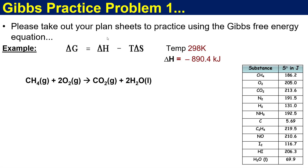Make sure you have your companion worksheet handy — let's try our first practice problem. We are calculating the free energy. They've given you standard state at 298 K and an enthalpy value of minus 890.4 kilojoules. You do not have to do anything with Hess's law, but they have not given you entropy for the system — they give you a table, so you have to calculate the entropy of the equation first. Pause the video now, try to solve this, and remember: if delta G is negative, the reaction favors a spontaneous process; if positive, it will not be spontaneous.